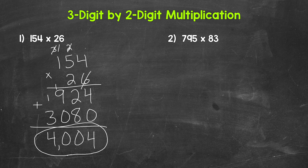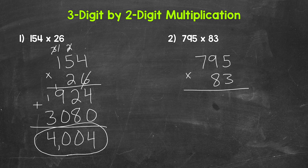We are done. Let's move on to number two, where we have 795 times 83. So let's set this up: 795 times 83. We'll do 795 times three, and then 795 times 80, and then add those to get our final answer.